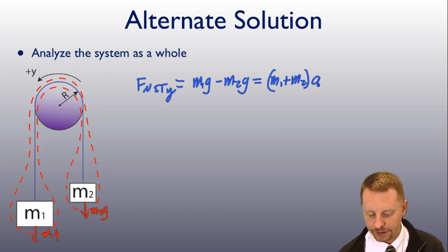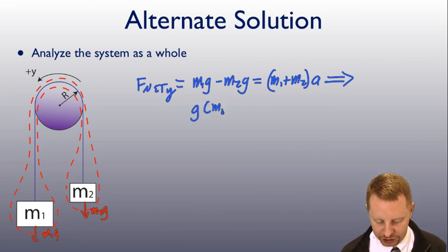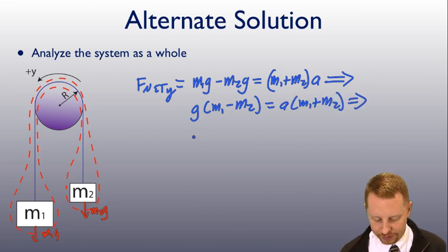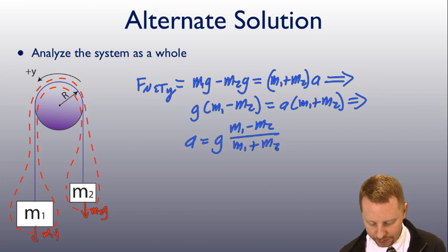Now it's a pretty easy rearrangement. I can pull G out on the left-hand side, G times M1 minus M2 equals A times M1 plus M2. Or, again, solving for A, A equals G, M1 minus M2 over M1 plus M2.